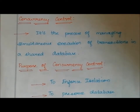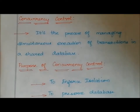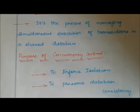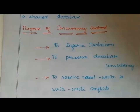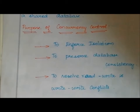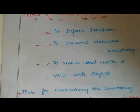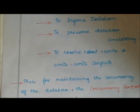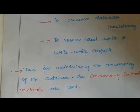In this video we are going to see the topic Concurrency Control Protocol. Concurrency control is the process of managing simultaneous execution of transactions in a shared database. The purpose of concurrency control is to enforce isolation between transactions, to preserve database consistency, and to resolve read-write and write-write conflicts.